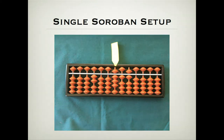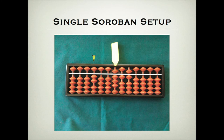This is the basic setup for the multiplication. We first set the multiplicand, then set the multiplier, and then one rod at a time of the multiplicand is to be multiplied by the multiplier. The product is entered to the right of the multiplicand, and finally the rod that we have multiplied in the multiplicand will be cleared. All this will be shown in action in our Soroban tutorial number eleven.